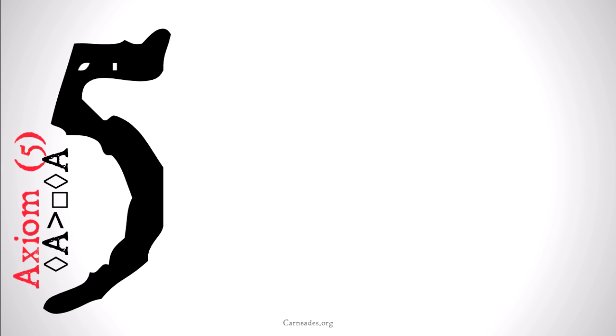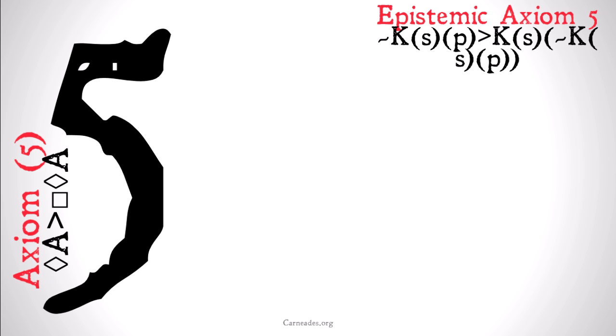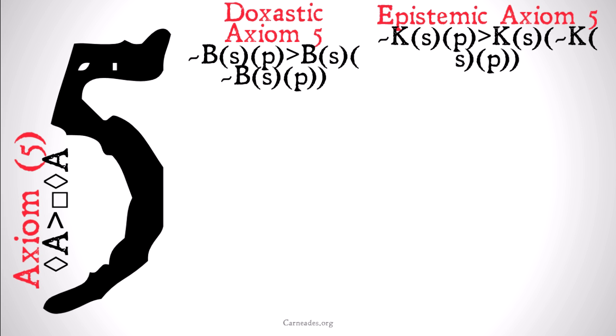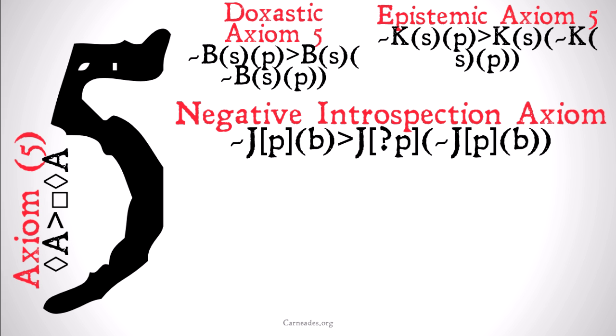Axiom 5 — we may remember from a big debate in alethic modal logic about whether system 4 or system 5 was a better representation of what we understand as possible worlds. Basically, axiom 5 looks something like this: if it's possible that A, then it's necessary that it's possible that A. We also had epistemic and doxastic versions of axiom 5, and generally all of these axiom 5s we concluded were pretty strong.